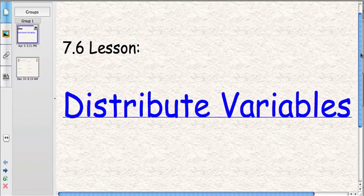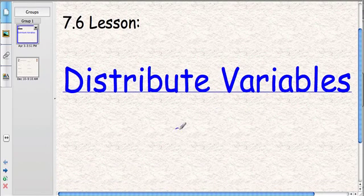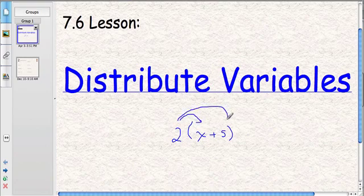An example of the distributive property might look something like this. If you had a question with a 2 and then a bracket, x plus 5, something like that, what we've learned before is that the distributive property means that you would multiply the terms inside this set of brackets by 2. We're multiplying because the operation that is in between the 2 and the bracket is multiplication.